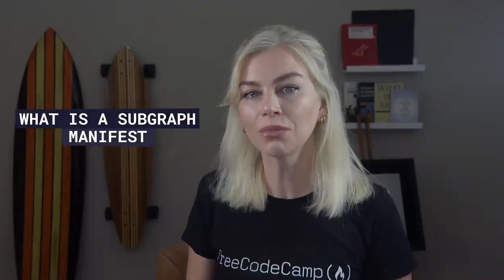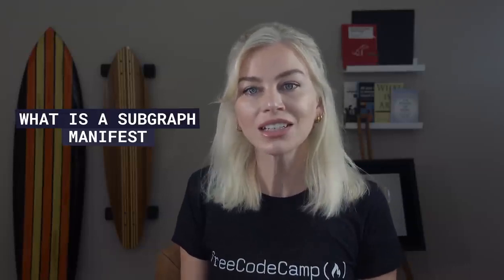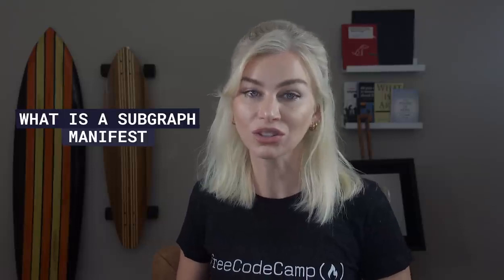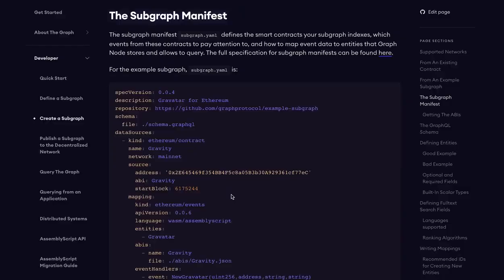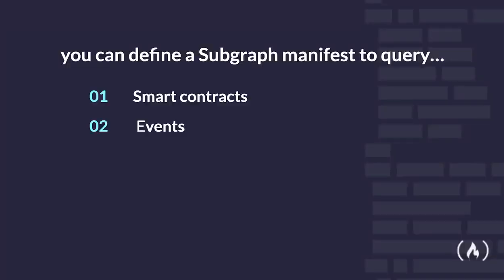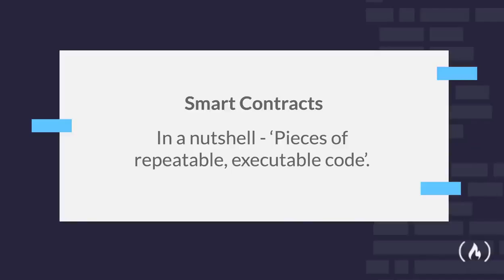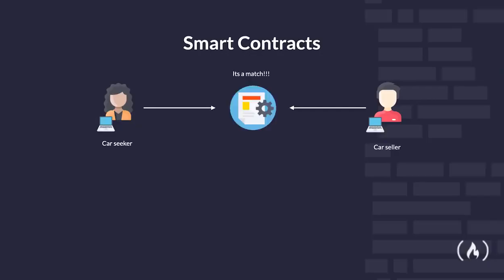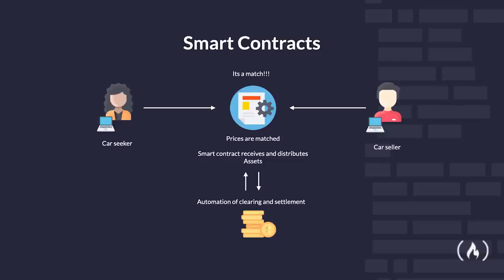A subgraph manifest — also known as a subgraph description — is something that The Graph uses to index the data that you need on the blockchain, and it is something that you define yourself. For example, you can define a subgraph manifest to query the smart contracts you are interested in, the events in those contracts to pay attention to, and how to map event data to data that The Graph will store in its database. Smart contracts on the blockchain, in a nutshell, are pieces of repeatable executable code stored on the blockchain that run when certain conditions are met — think: if this happens, then that happens.